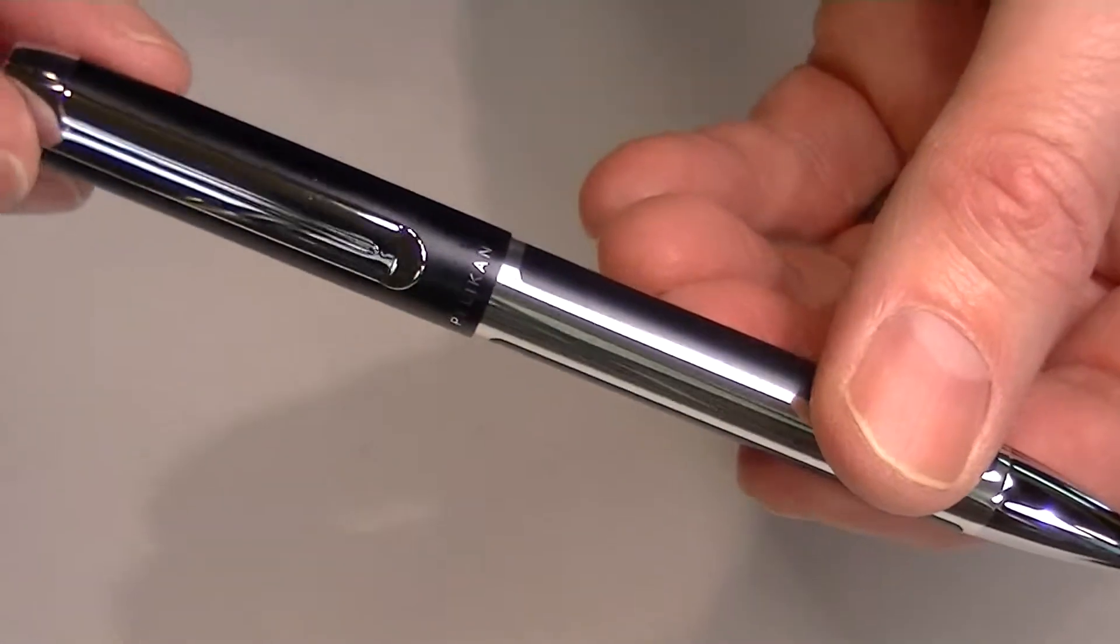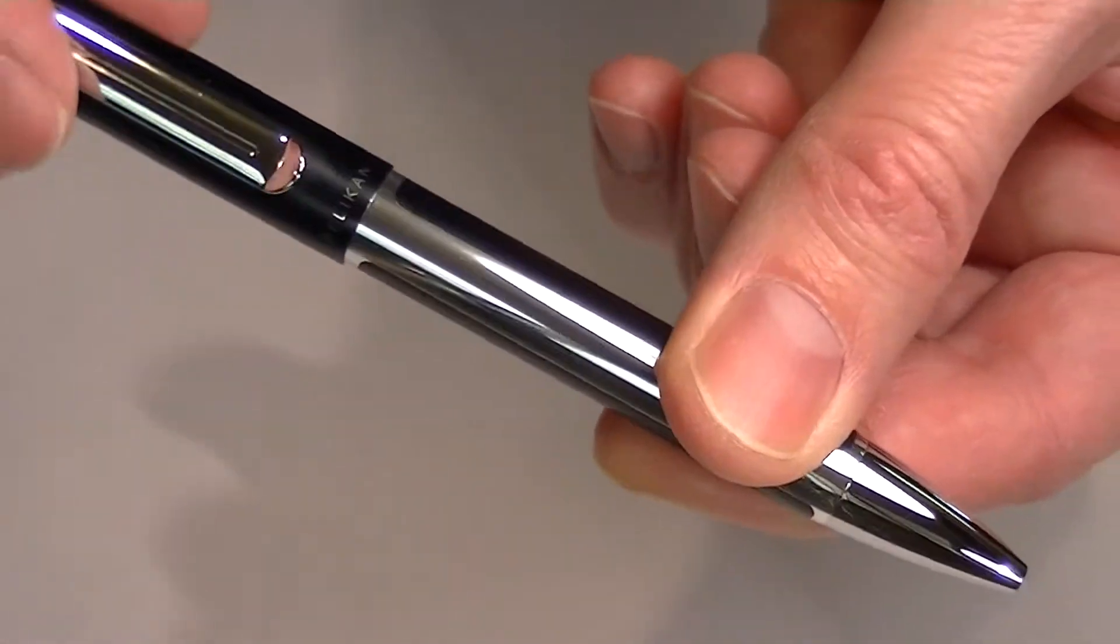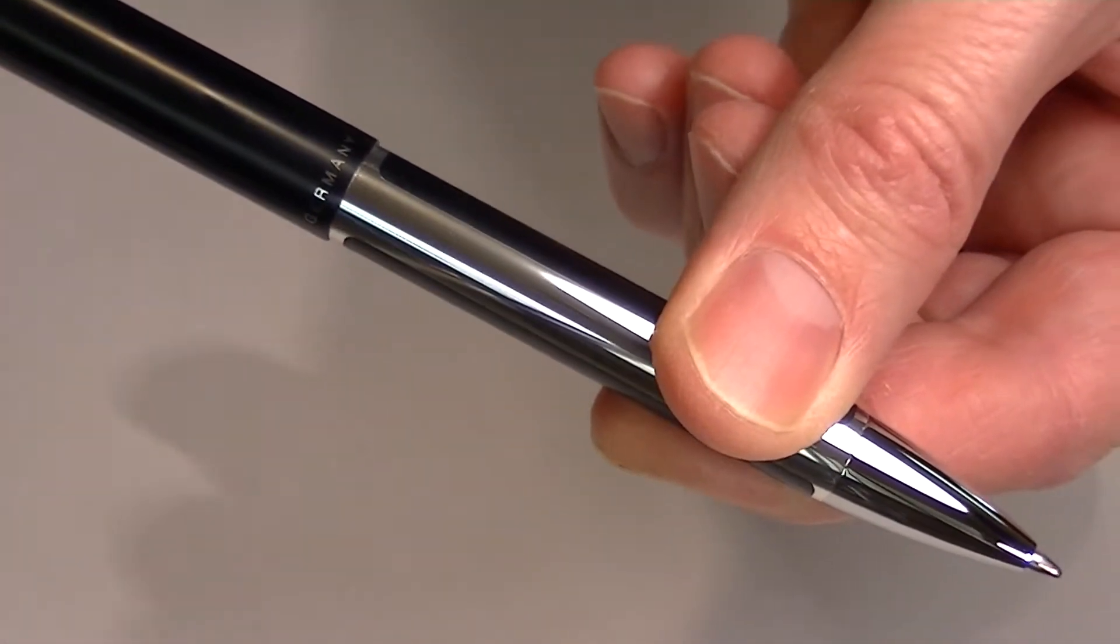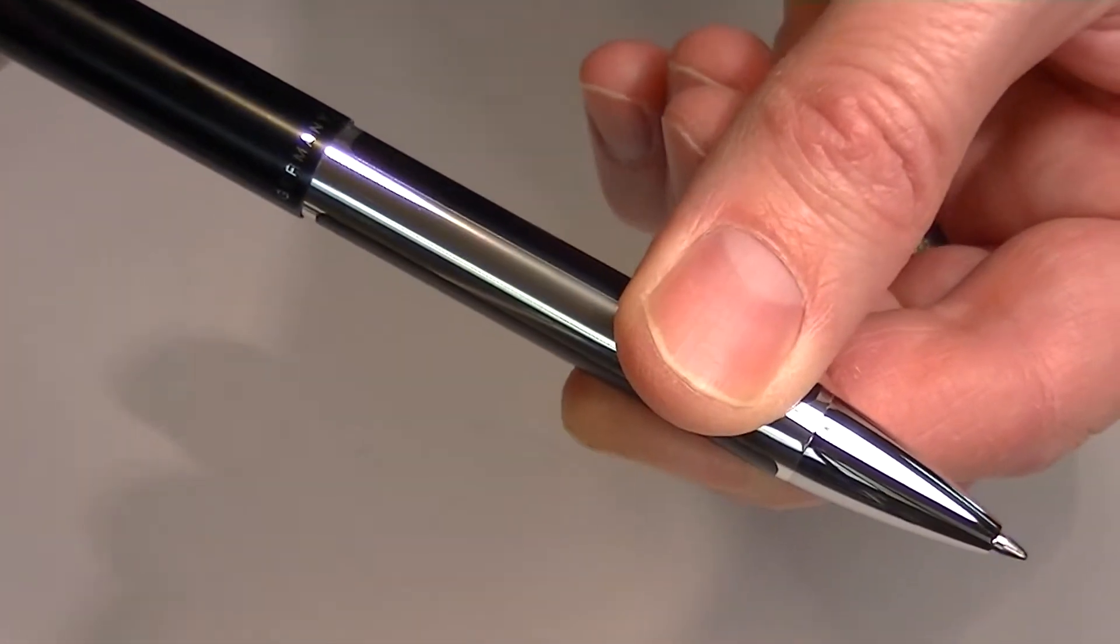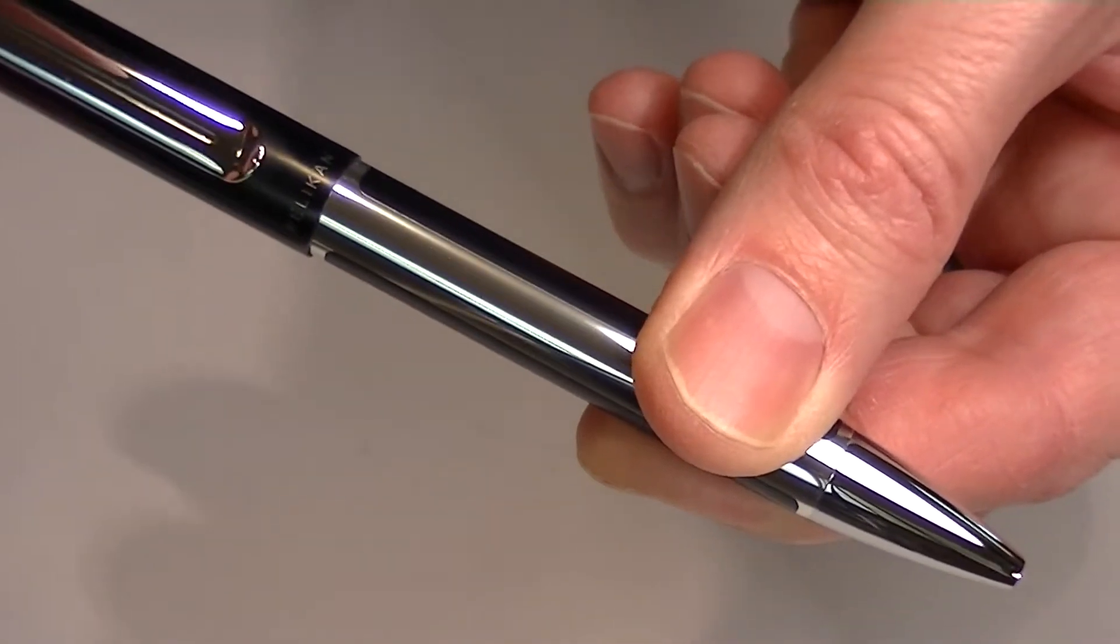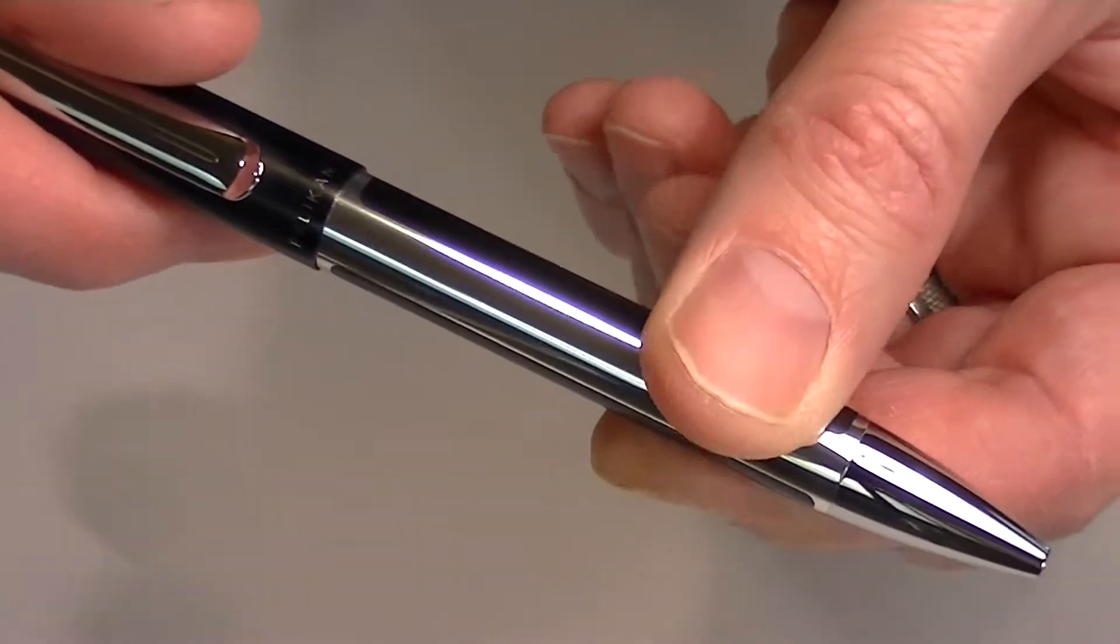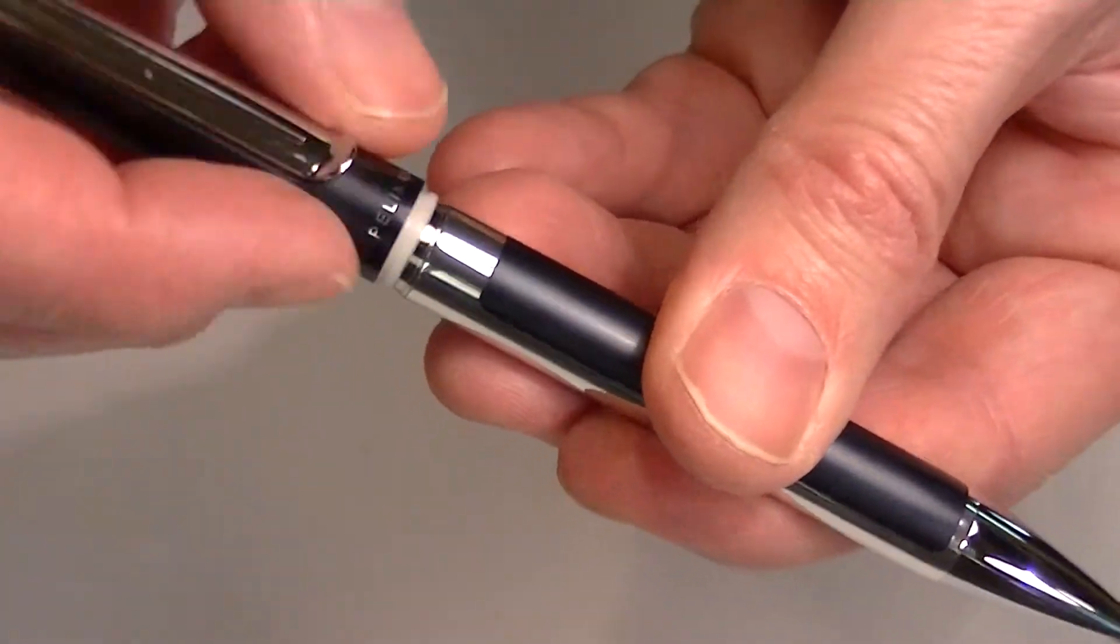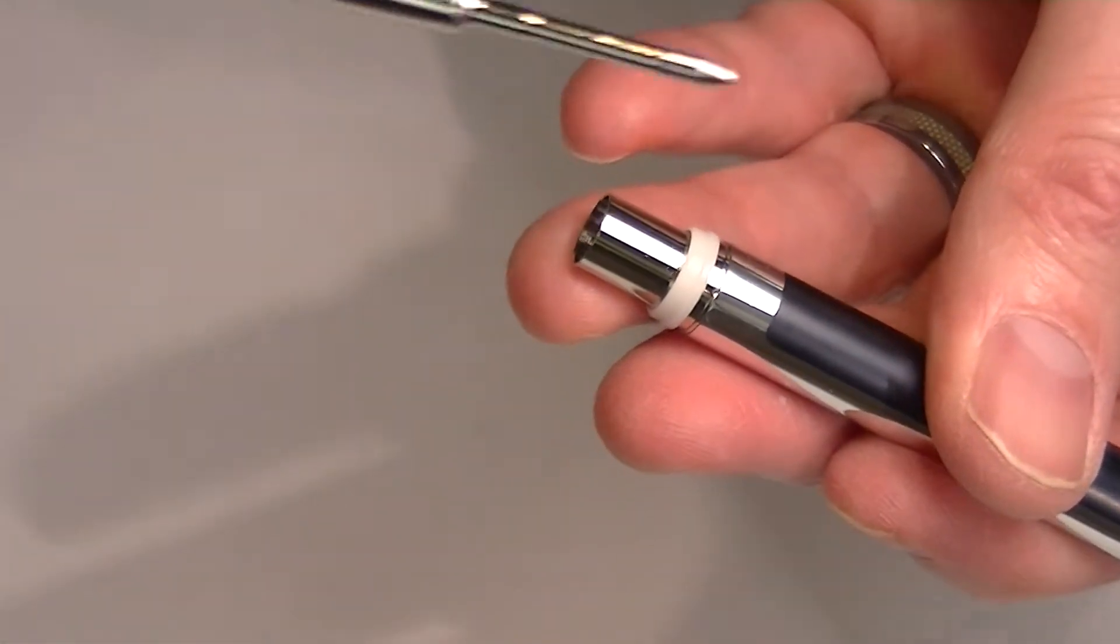To extend the refill on this pen it's a twist action. You simply twist the cap in a clockwise direction. The refill comes out. Twist it back in the opposite direction and the refill retracts. If you continue to twist the cap in the counter clockwise direction you can pull that refill out.